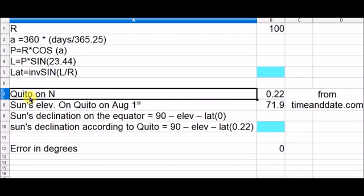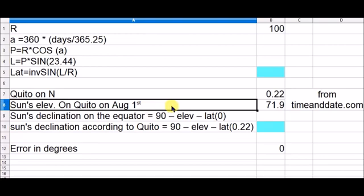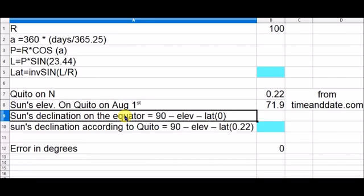I'll take Quito as a reference from timeanddate.com. And Quito is not exactly on the equator, it's 0.22 degrees north. The sun elevation on Quito on the 1st of August is 71.9. The sun declination on the equator equals 90 minus the elevation angle minus the latitude line, which is 0 on the equator. And this is the same equation that we're going to use to conclude the declination angle on the Earth on that specific day.